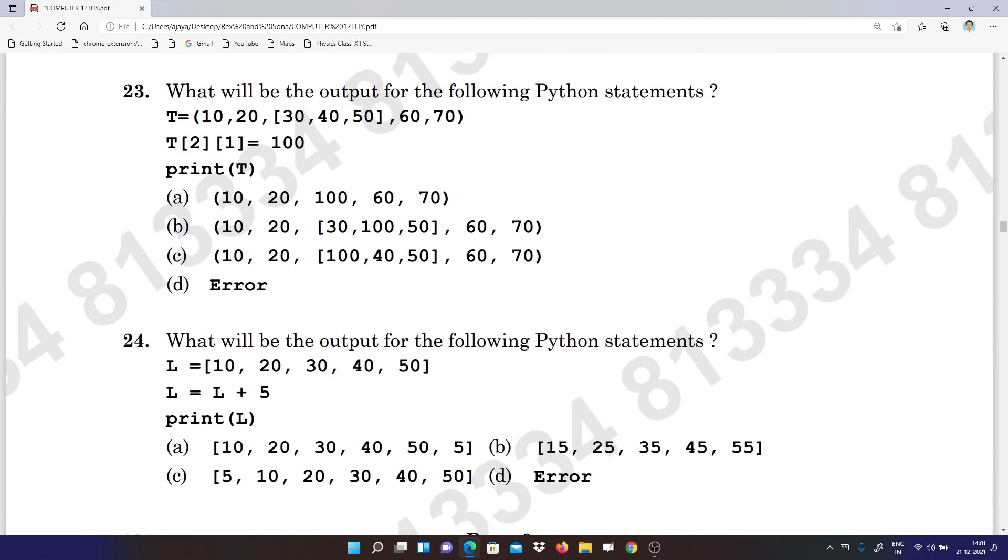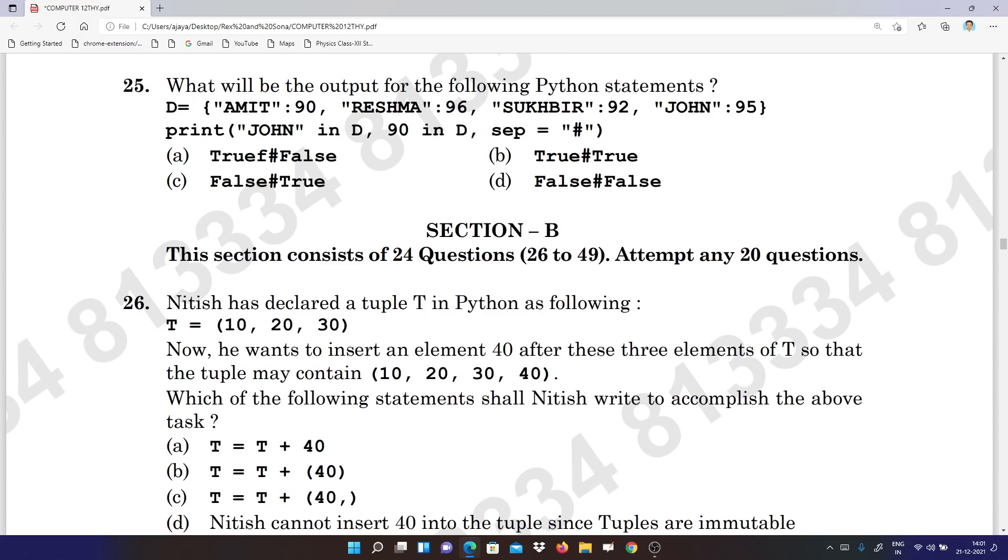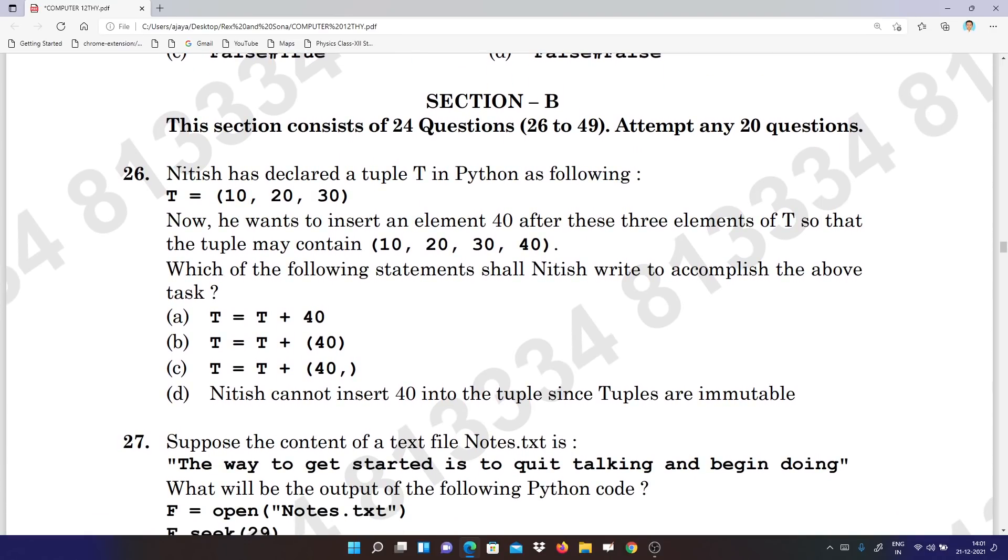Twenty-three: B. Twenty-four: D. Twenty-five: A. Now Section B starts.